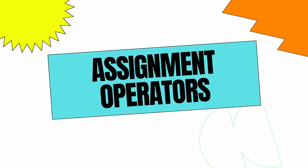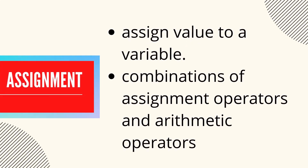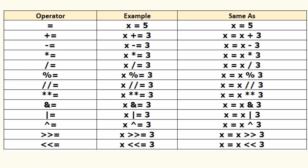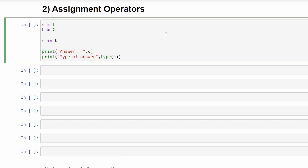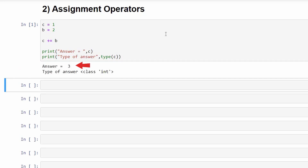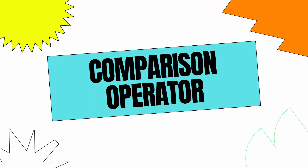Next on our list is assignment operators. These let us assign a value to a variable with the help of an equal sign, but it is much more than that. It also has operators which combine assignment and arithmetic operators to do both operations in one go. For example, with c equals 1 and b equals 2, writing c plus equals b means add c and b and assign the result to c — the value in c gets updated to 3. Other operators work in the same fashion.